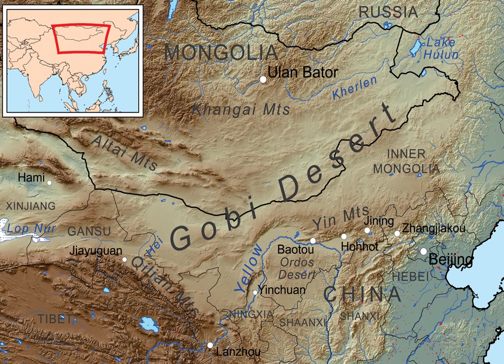The expansion of the Gobi is attributed mostly to human activities, notably deforestation, overgrazing, and depletion of water resources. China has tried various plans to slow the expansion of the desert, which have met with some small degree of success, but no major effects.